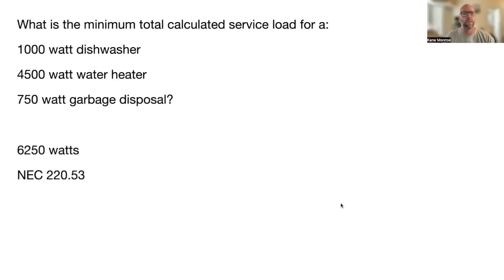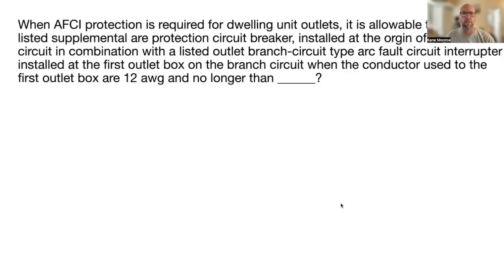When AFCI protection is required for dwelling unit outlets, it is allowable to use a listed supplemental arc protective circuit breaker installed at the origin of the branch circuit in combination with a listed outlet branch-circuit type arc fault circuit interrupter installed at the first outlet box on the branch circuit when the conductor used to the first outlet box is 12 awg and no longer than 75 feet. You can't be more than 75 feet away from the origination of the branch circuit. NEC 210.12(A)(3)(B).